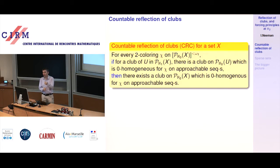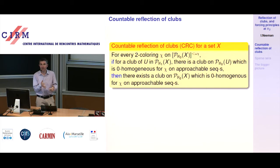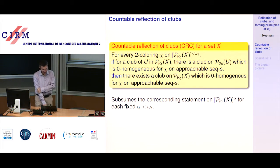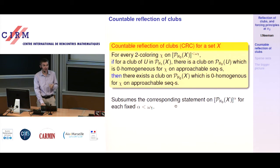The sequences have to be approachable, so if U is not approachable there probably won't be that many sequences. I do require the hypothesis for a club of U. So: for a club of U there is a club on U which is 0-homogeneous, then there is overall a club which is 0-homogeneous. Initially I won't use the strength for all countable sequences — I'll fix some length and just use a statement for a particular length alpha. But this statement subsumes all statements for fixed countable length alpha.